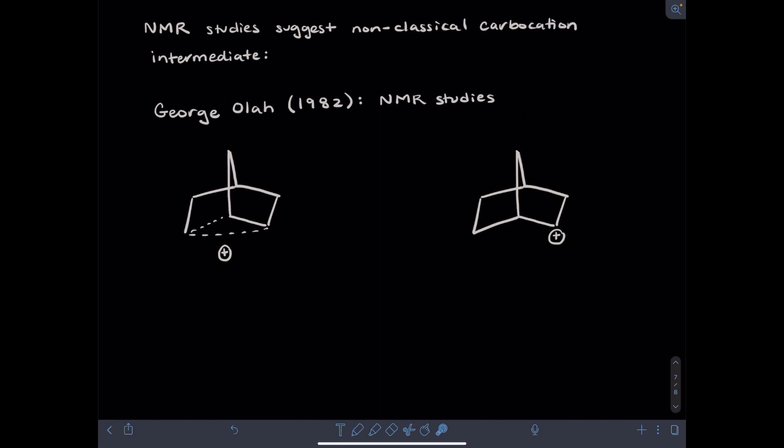So here are the two structures we're comparing again. We've got a non-classical carbocation, where it's one structure with two partial bonds, where the positive charge is delocalized, compared to one carbocation present at a single site that could undergo a rearrangement to generate a second carbocation. So the non-classical versus the classical view of this particular carbocation.